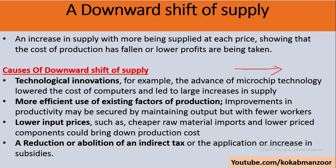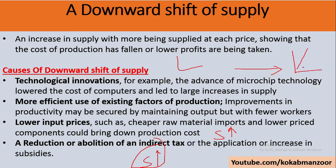Cheaper imports of raw materials also bring down production costs, causing the supplier to increase supply. Likewise, a reduction or abolition of indirect taxes reduces the cost of production and the supplier will increase supply. In summary, whenever the cost of production is reduced — whether through technology, efficiency, cheaper imports, or lower taxes — the profit margin increases and the supplier will increase supply at the same selling price. This is called a downward shift, where the supply curve shifts to the right.